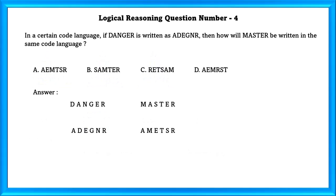In a certain code language, if danger is written as A D E G N R, then how will master be written in the same code language?